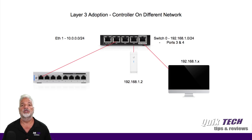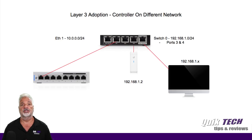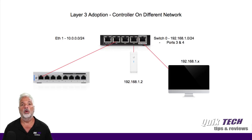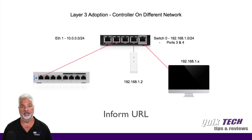In this example, we're looking at a layer 3 adoption scenario where the controller lives on a network that's different from the devices. Unlike local adoption where the devices start up, get a DHCP address, and automatically find the controller via auto discovery, on a layer 3 scenario it's a little different — we have to tell the devices where that controller resides. That's called layer 3 adoption. In the UniFi world, we have to use an inform URL to tell those devices what network the controller is residing on.